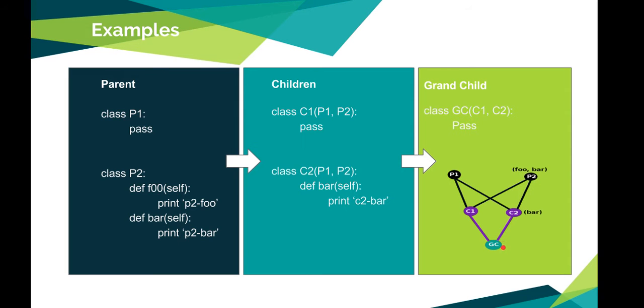When you try to execute bar, it goes to C1, does not find it. Then goes to P1, does not find it. Then goes to P2, finds it and executes it. But if you see, your mother C2 is much nearer to you as compared to your grandmother. The generation gap is very less compared to your grandmother. So you should actually inherit this bar from C2 instead of P2 bar. That was one of the flaws we had in Python old style classes.